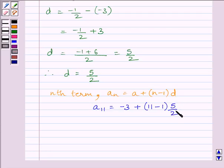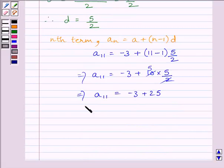So we get a_11 = -3 + 10 × 5/2. Now 2 and 10 will simplify, so 2 gets cancelled and we get 5 × 5. This implies a_11 = -3 + 25. This implies a_11 = 22.